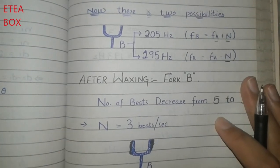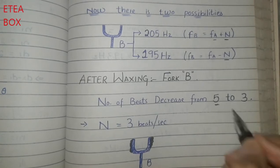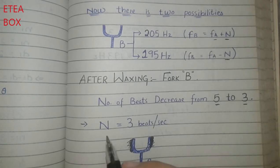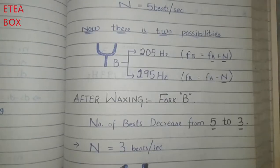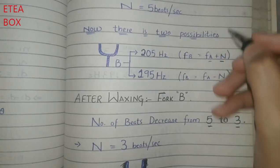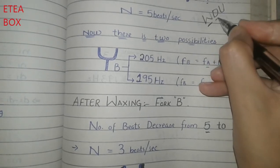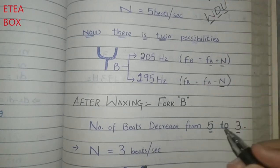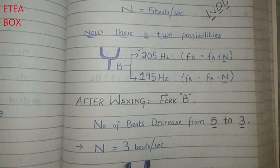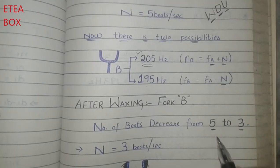Now, if you apply wax on tuning fork B, the number of beats decreases from five to three. After waxing, the beat frequency has decreased, so you apply the WDU trick. After waxing, if the beat frequency decreases, select the upper value. The upper value here is 205, so the frequency of B is 205 Hz.